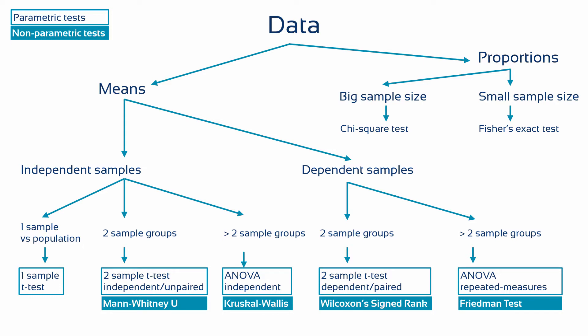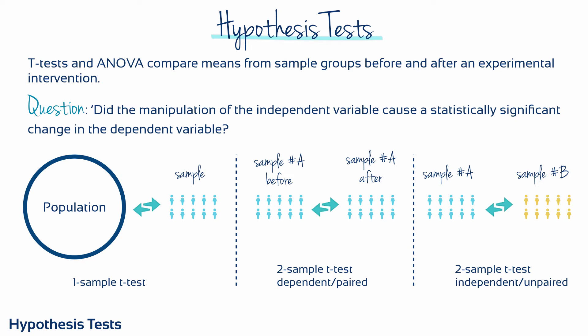In the past, it was important to understand the mathematics and equations involved in each test because they were calculated manually with pen and paper. In the age of widespread computers and statistical software, it's more important to be able to recognize which hypothesis test you should be choosing to apply to your data, so as to avoid an erroneous or misleading conclusion.